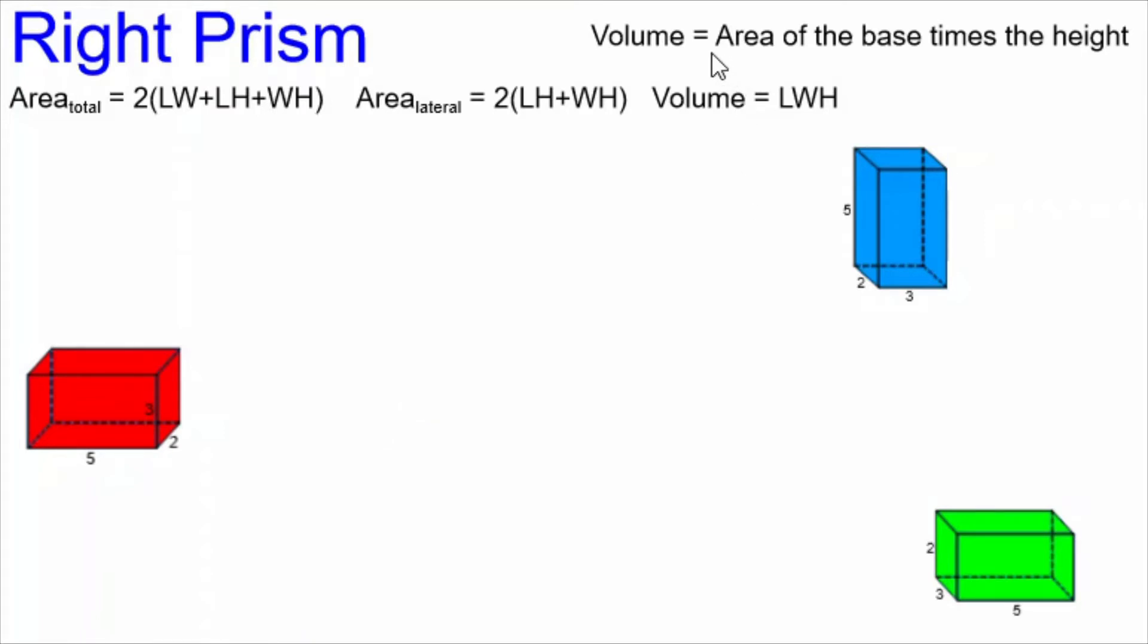The volume is equal to length times width times height. It's a very easy formula to apply, but it's not really necessary. Because another way of seeing the volume formula is the area of the base times the height.